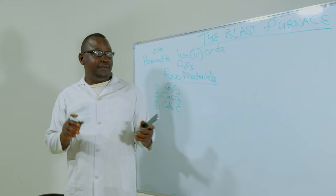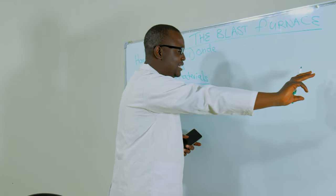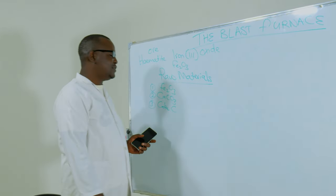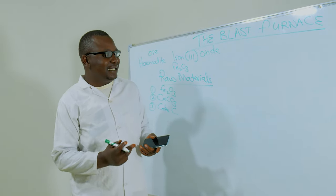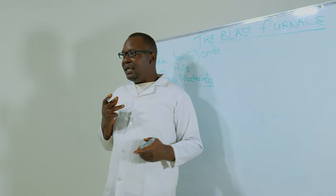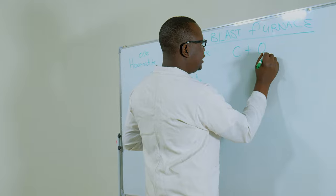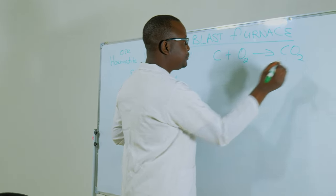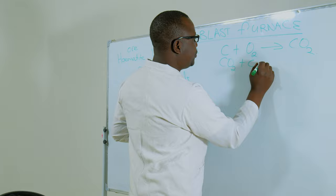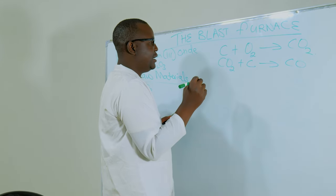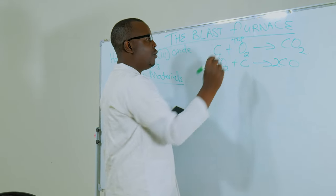After these three raw materials are fed at the top of the blast furnace, you need to understand what happens at the top, middle, and bottom of the blast furnace. Hot air is introduced into the blast furnace, and the first reaction that occurs at the top is carbon reacting with oxygen to produce carbon dioxide. Then the second reaction: carbon dioxide combines with carbon to produce carbon monoxide. We put a 2 here so that the equation is balanced.